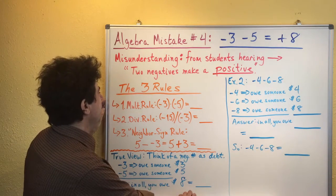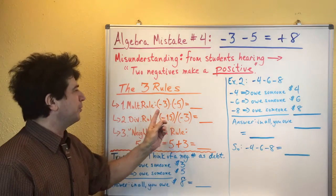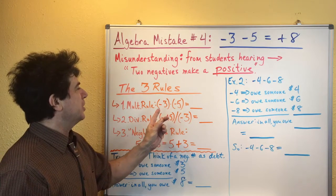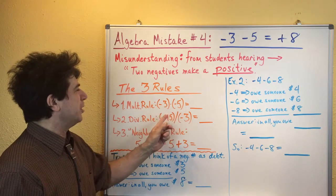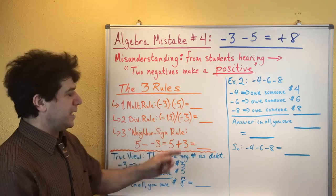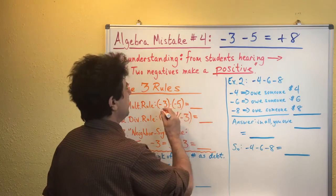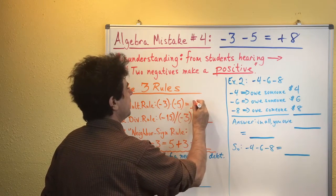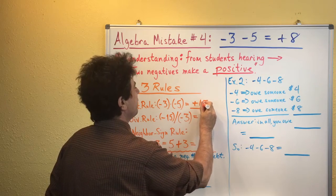The three places this is true are first of all the multiplication rule for integers. If you've got two negative numbers and you multiply them together, they make a positive number. So negative three times negative five because you've got two negatives would give you a positive 15.